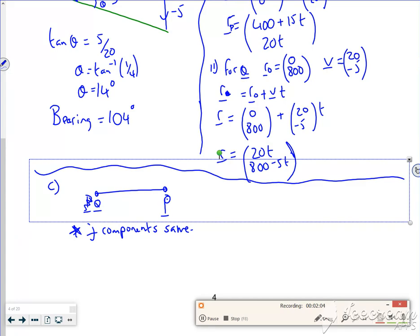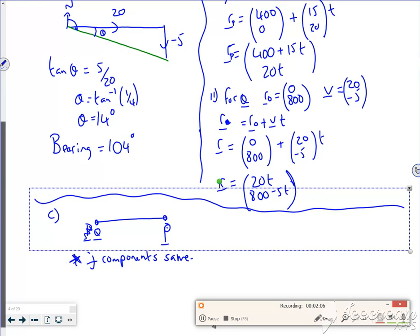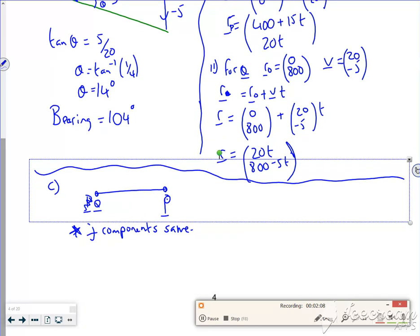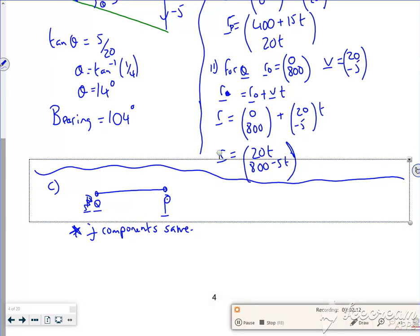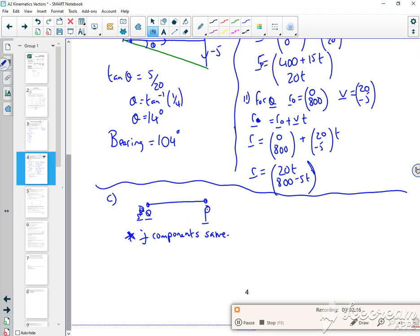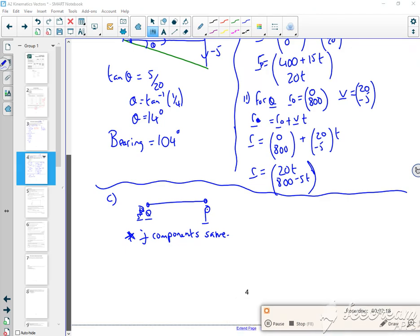So the j component for P is 20t. I can't seem to move the board down, hang on.